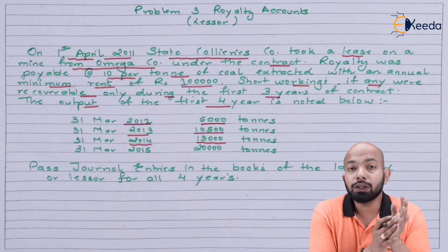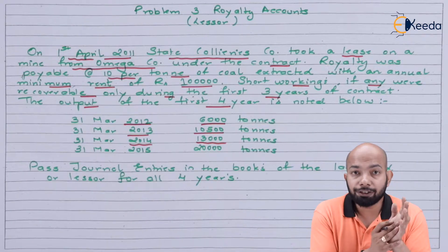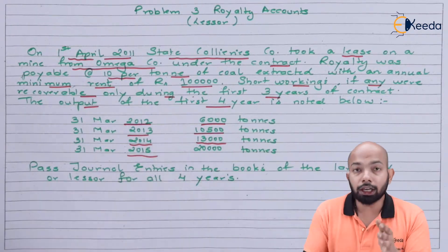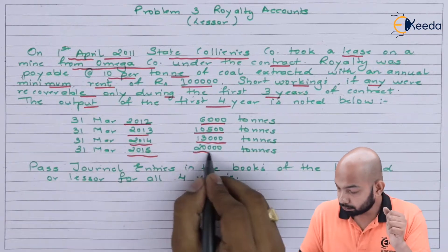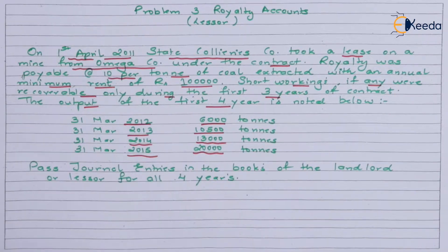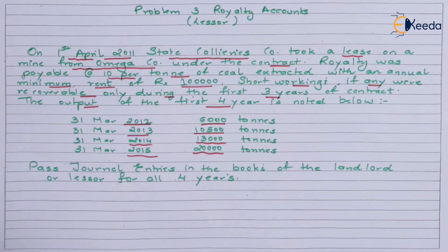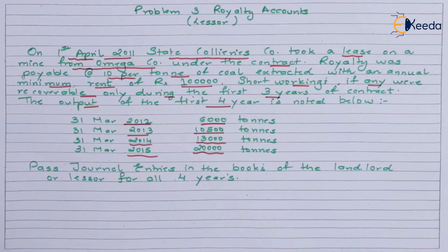For 31st March 2015, the output was 20,000 tons. We have to pass the journal entries for all four years in the books of the landlord — that means in the books of the lessor, which here is Omega Company Limited.